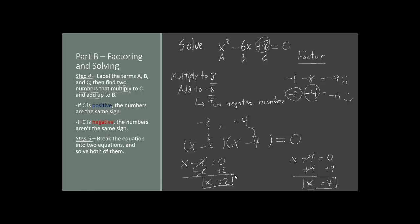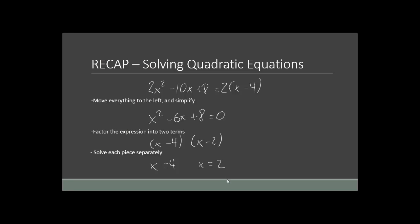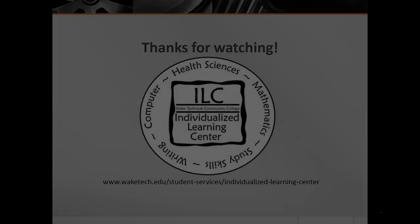I know this was kind of involved, so let's briefly recap. We started with a messy-looking equation, moved everything to the left, and simplified it as much as possible. Then we factored the expression to get two parentheses and solved each piece separately to get x equals 4 and x equals 2. Thank you very much for watching. We'll see you again next episode.